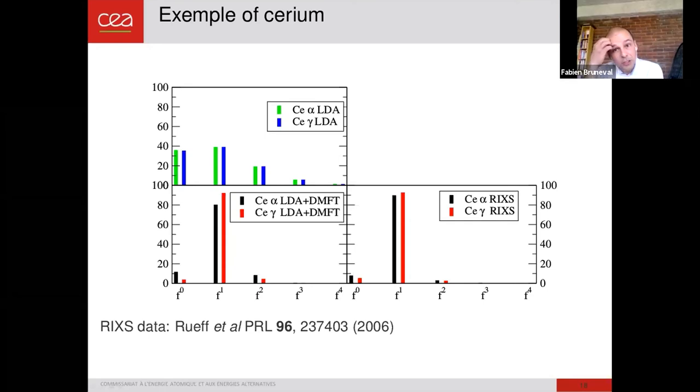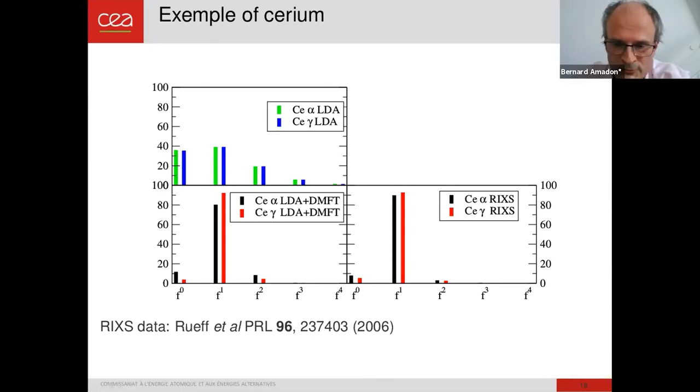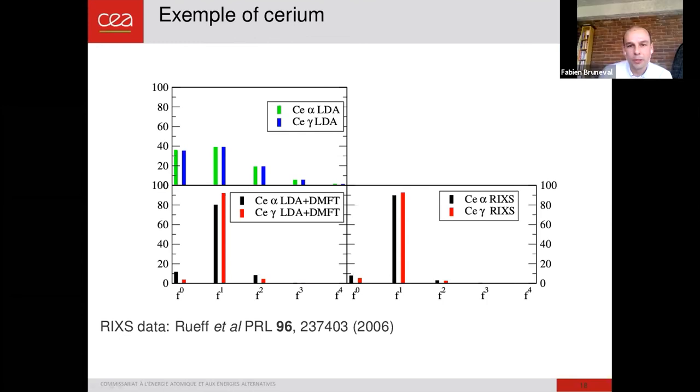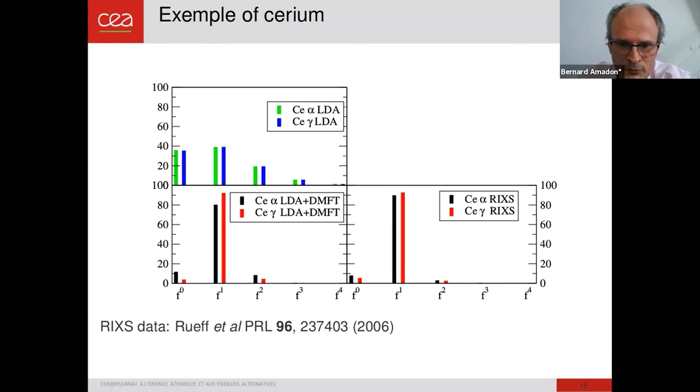And also we have questions about the Legendre polynomials. The question is what did you do before? The Legendre polynomial is not yet in the public version of Abinit, neither in the developer version. It's only on my branch. And so what do you do with the noise? We have the noise, and in order to push the noise to high frequency, we have to have a large number of data points in the imaginary time space.